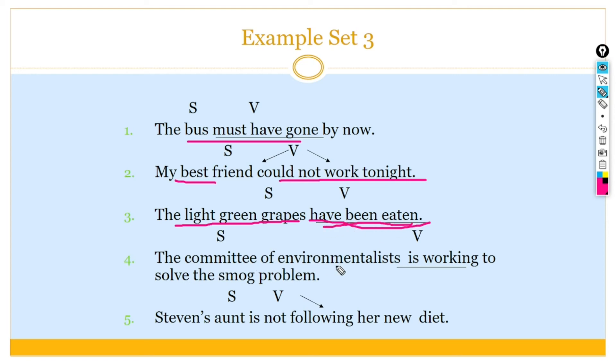So, the light green grapes is a subject, have been eaten is the verb. Committee of environmentalists is the subject, is working to solve the smoke problem is predicate. Similarly, steamer on is a subject, is not following her new diet. So, you can see in this sentence, the predicates and subject.